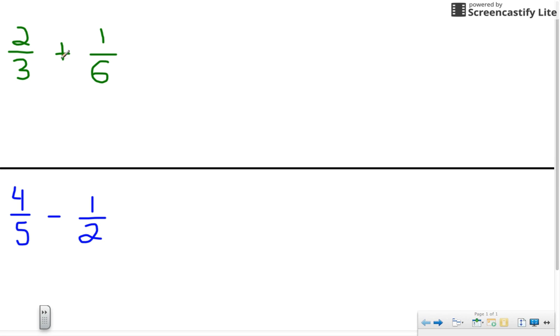So this first problem here you can see two-thirds plus one-sixth. Three and six are not the same. You cannot add or subtract fractions if the denominators are different. So I'm gonna show you how I'm gonna teach this to students in class so that you can understand it yourself and help with any tasks that might come home. So the first thing we're gonna do is we're gonna look at the denominator, which is our bottom number. So I have a three and a six.